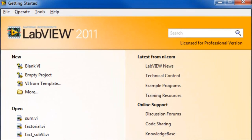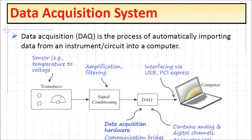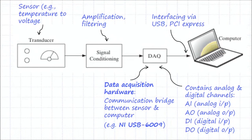In this video tutorial, data acquisition via LabVIEW will be demonstrated in electrical engineering applications. Data acquisition is the process of getting signals in the form of voltage or current from a transducer such as a sensor and storing it in a computer for analysis purposes. This block diagram shows a typical data acquisition system.